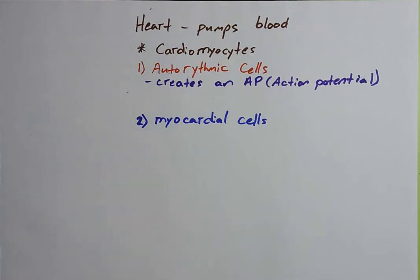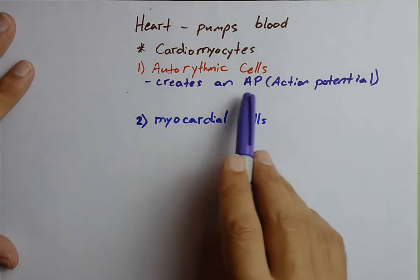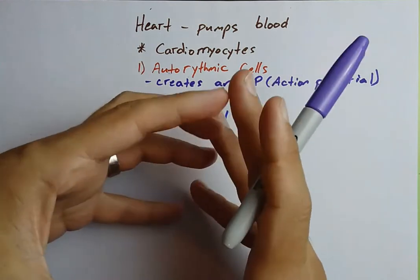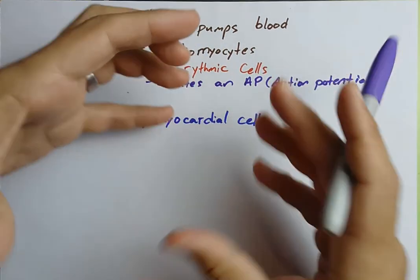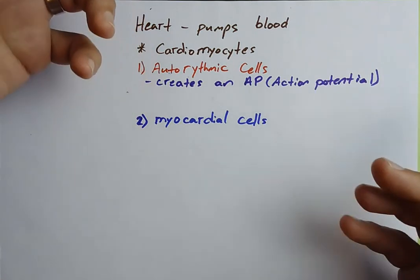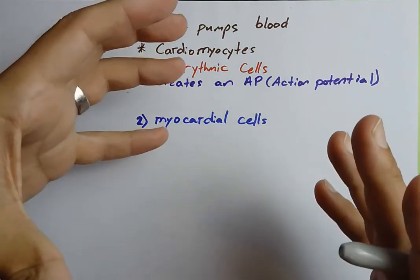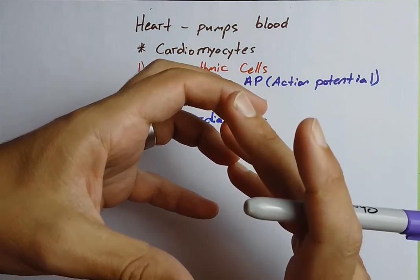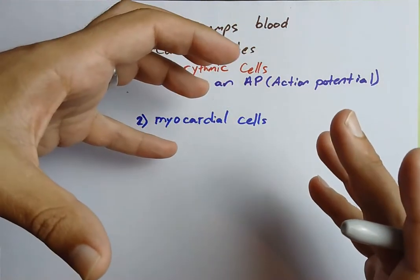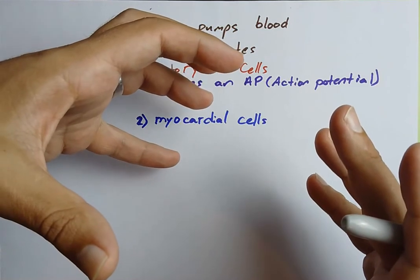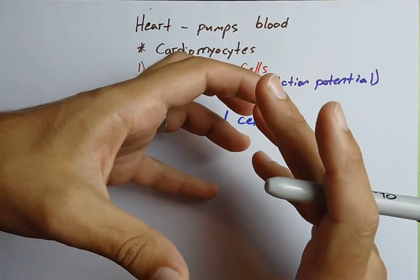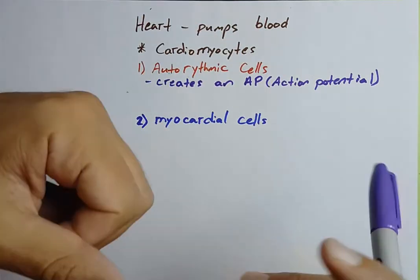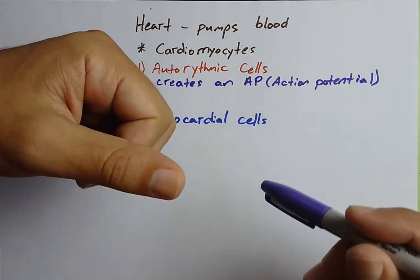There's going to be more to that. Because if you think about each time that an action potential travels through the heart, that electricity spreads and conducts to the muscles — the electricity is going to cause the heart to contract. When that electricity is gone, the heart is going to relax. A new action potential is created, contraction; action potential gone, relaxation. This is what creates the heartbeat and the heart rate.